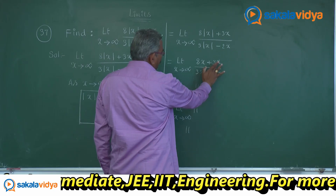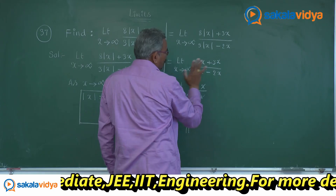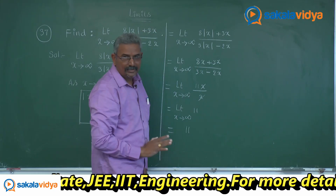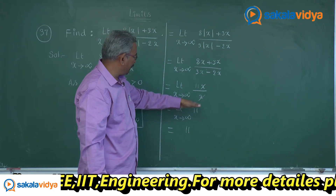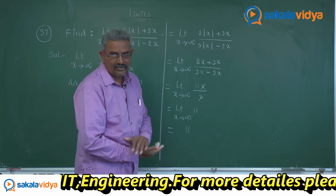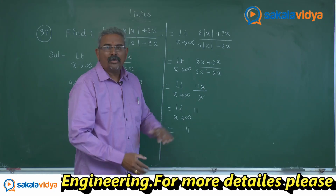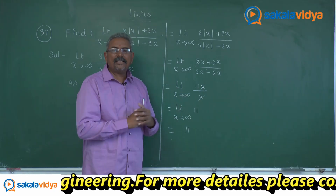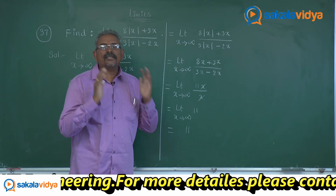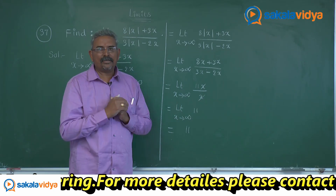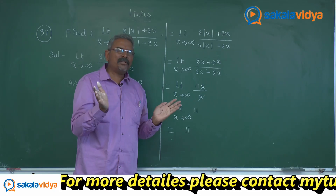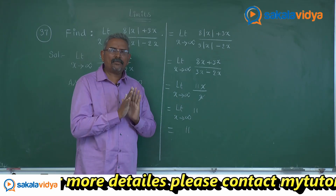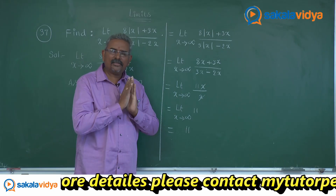8x plus 3x gives 11x, and 3x minus 2x gives x in the denominator. So this is 11x divided by x, x cancels. 11 is a constant, and the limit of a constant never changes.